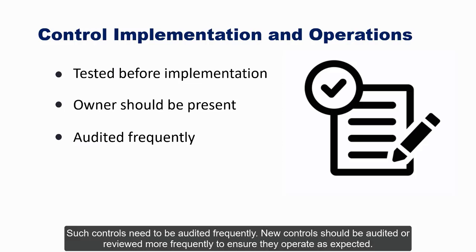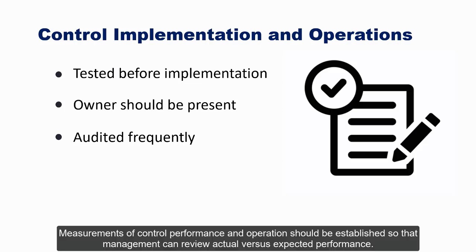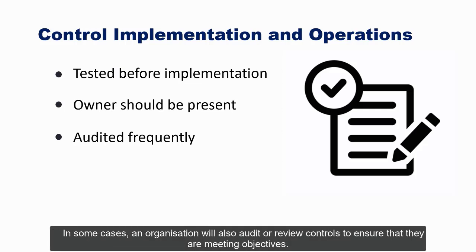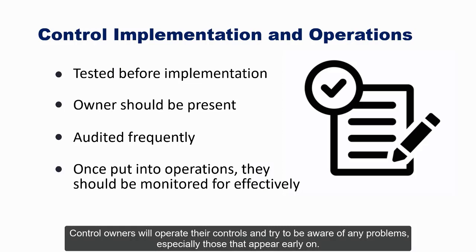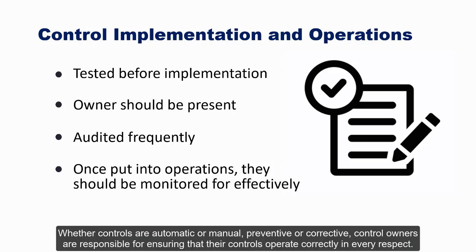New controls should be audited or reviewed more frequently to ensure they operate as expected. Measurements of control performance and operation should be established so that management can review actual versus expected performance. Once controls are put into operation, they should be monitored effectively. Controls placed into service will transition into routine operations, and control owners will operate their controls and try to be aware of any problems. Control owners are responsible for ensuring that their controls operate correctly in every respect.